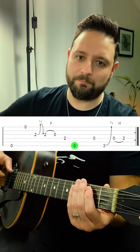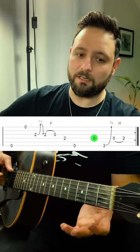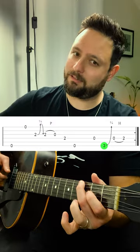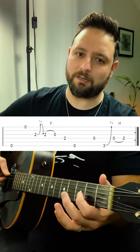Then we play low E again, then we're going to play open D, then we're going to play third fret on low E with a slight blues bend, then we're going to hammer on from the open D string to the second fret.